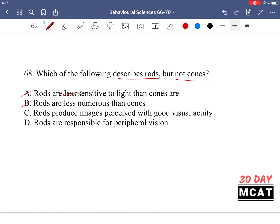C is saying rods produce images perceived with good visual acuity. No, they're actually much poorer in terms of visual acuity. Cones have higher visual acuity. And finally, D is correct. Rods are responsible for peripheral vision because they are present on the sides. Whereas cones are not. And because of that, cones aren't really playing a part in peripheral vision.